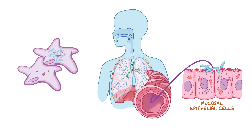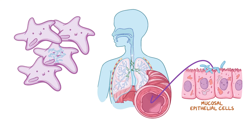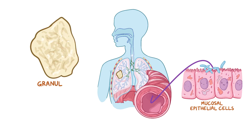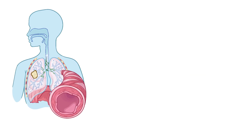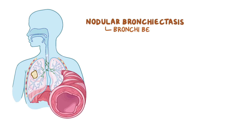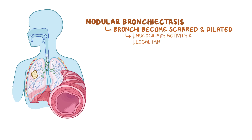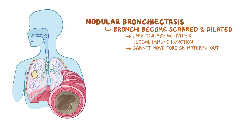When these mycobacteria multiply, they can cause inflammation, and this attracts more macrophages to the area. They try to quarantine the invaders by forming granulomas, and as these grow bigger, they form nodules. Eventually, this leads to nodular bronchiectasis, and the inflammation causes damage to the bronchi, which becomes scarred and dilated. The damaged bronchi have diminished mucociliary activity as well as decreased local immune function, and thereby lose their ability to move foreign material out of the lungs, so mucus can collect in these dilated areas, making it the perfect environment for bacterial growth.